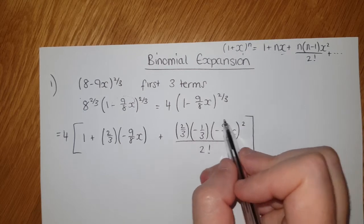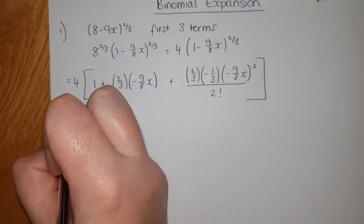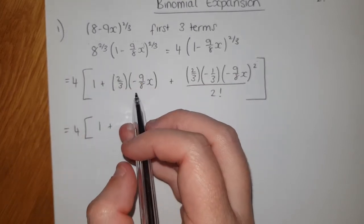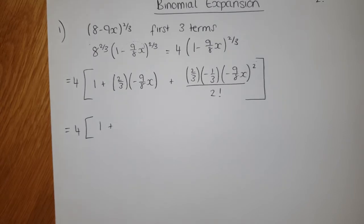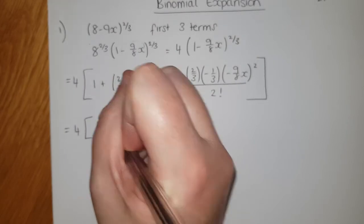Just remember it is the whole thing squared, okay, when you type in your calculator. So you get 4 lots of 1 plus, 2/3 and -9/8 is actually going to give us -3/4 x.